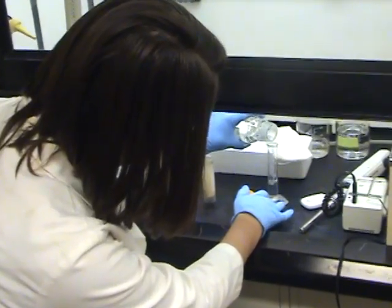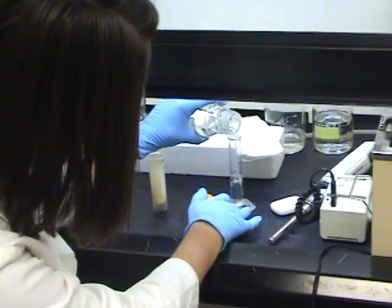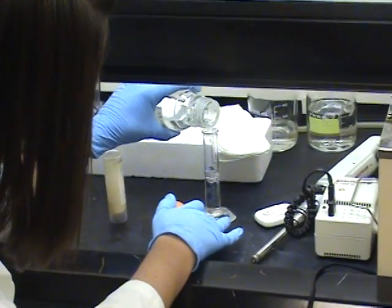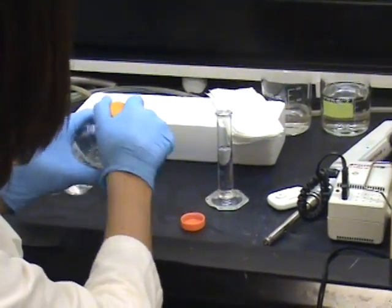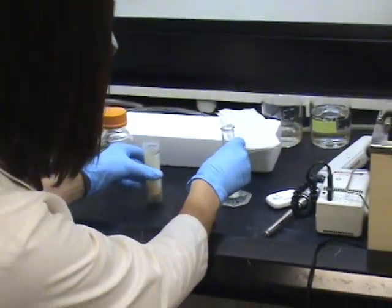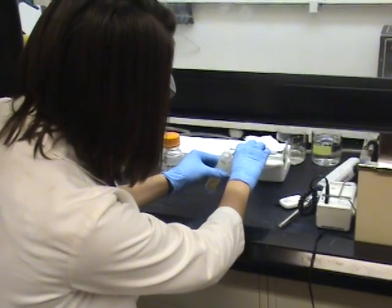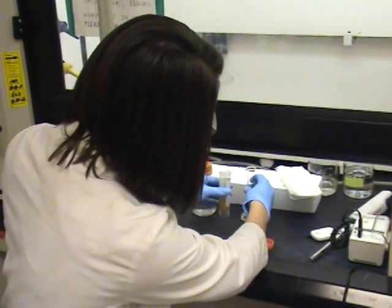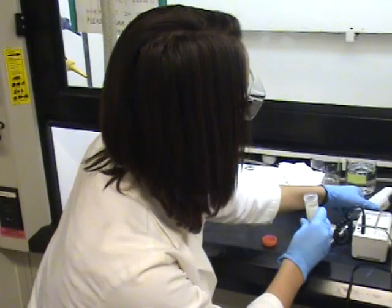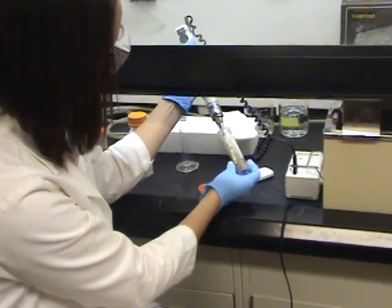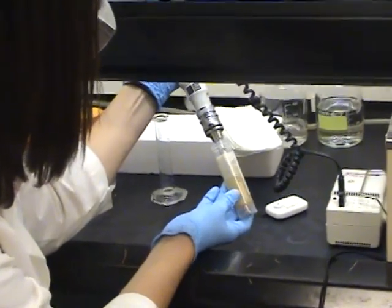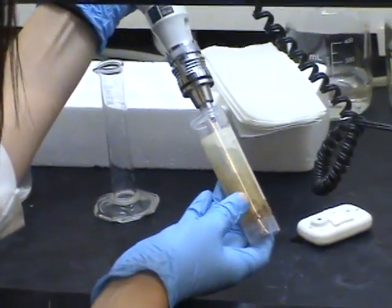To begin the lipid extraction, 20 milliliters of hexane is poured in the dried algae sample. A homogenizer is used to break apart and disrupt the cell walls so that lipids can be extracted. The sample is homogenized for five minutes.